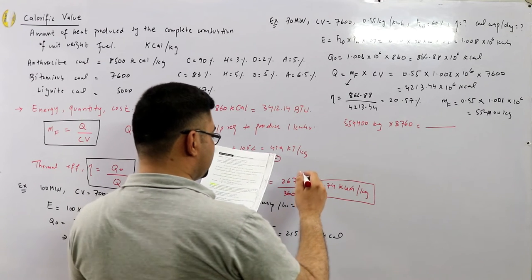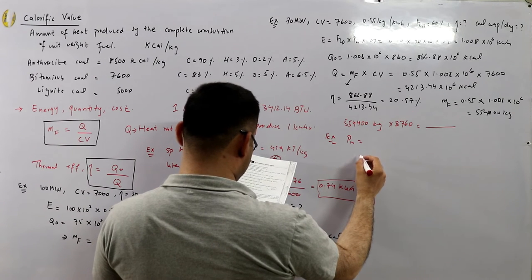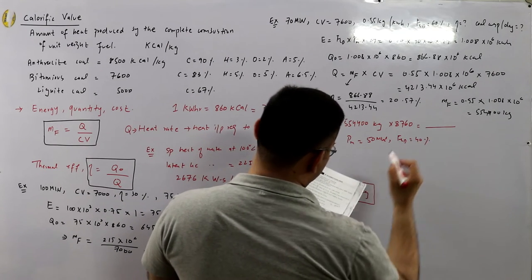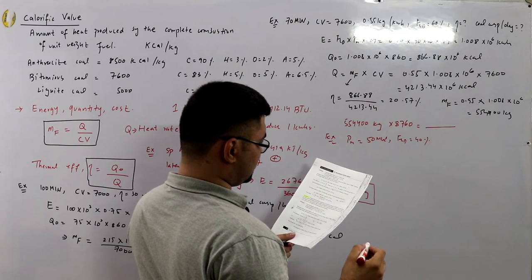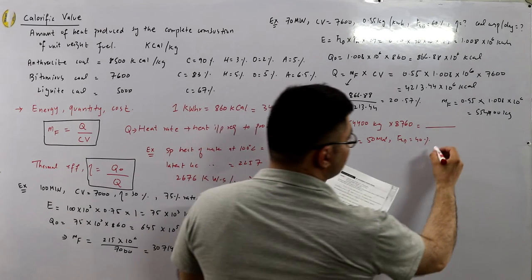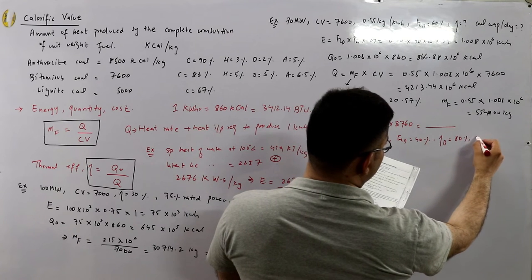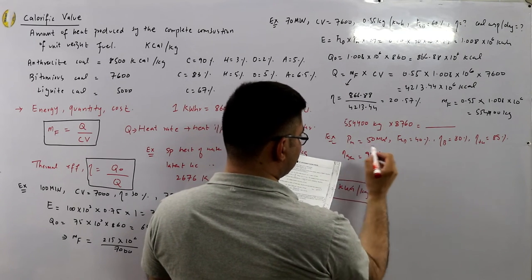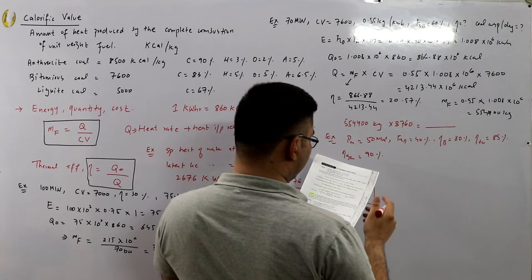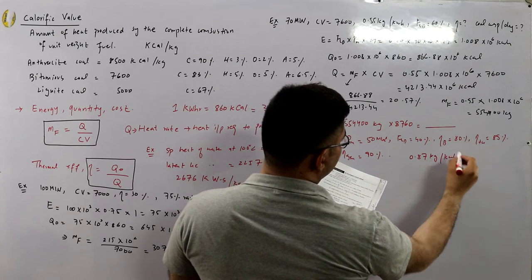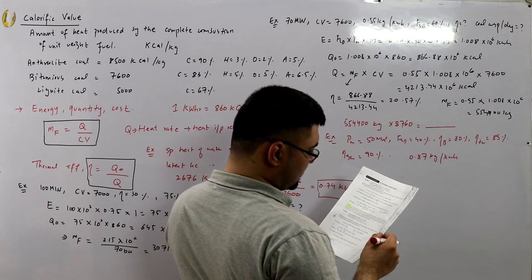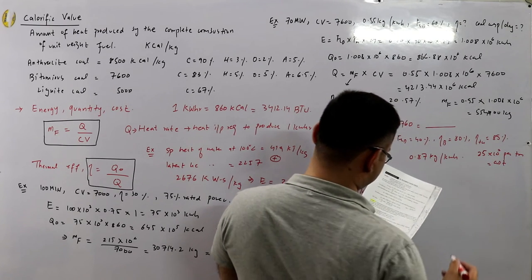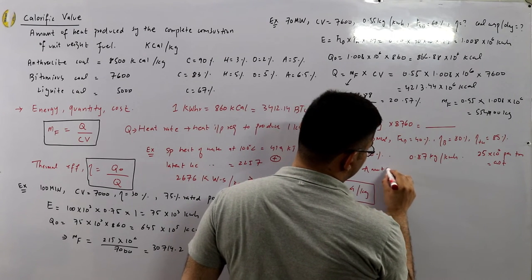Example 3: A thermal power station has a maximum demand of 50 MW at a load factor of 40%. Boiler efficiency is 80%, turbine efficiency is 85%, and generator efficiency is 90%. The station consumes coal at 0.87 kg per kilowatt hour, and coal costs 25,000 per ton. Calculate the amount spent on coal annually.